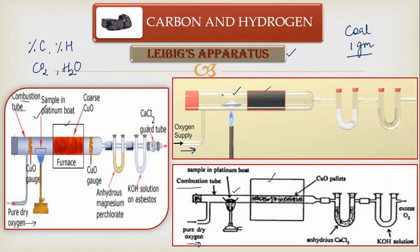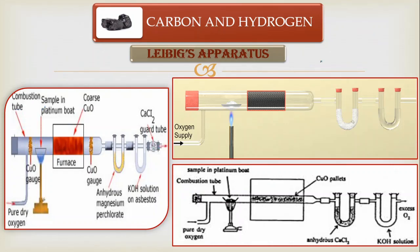In the combustion chamber you heat your sample in the presence of oxygen. As for the reactions: carbon reacts with oxygen to form CO₂, and hydrogen reacts to form H₂O. Combustion takes place with the help of a catalyst — copper oxide is normally used as the catalyst. You can place your copper oxide inside the combustion chamber.